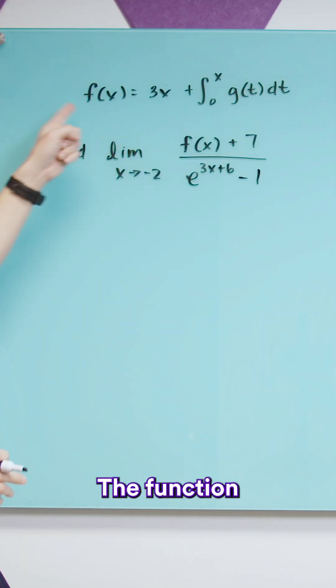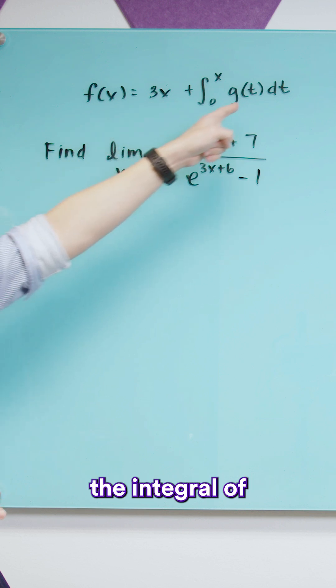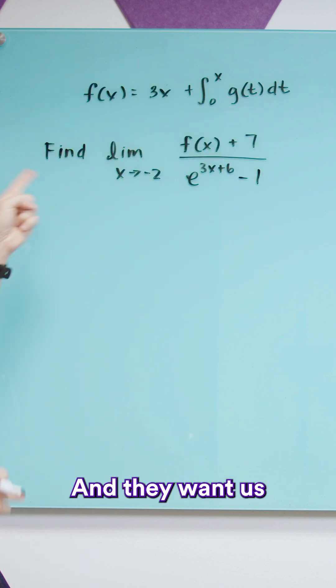All right, so in this question we're given the function f of x is equal to 3x plus the integral of g of t from 0 to x and they want us to find the limit as x approaches 2.